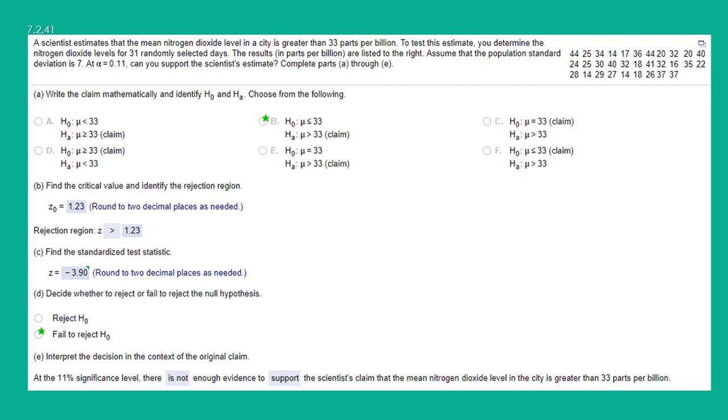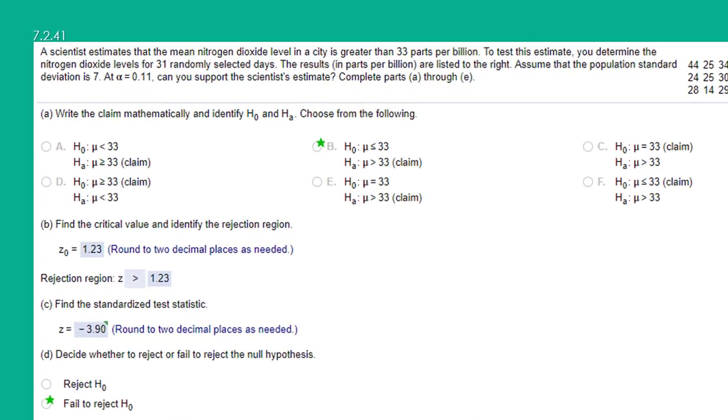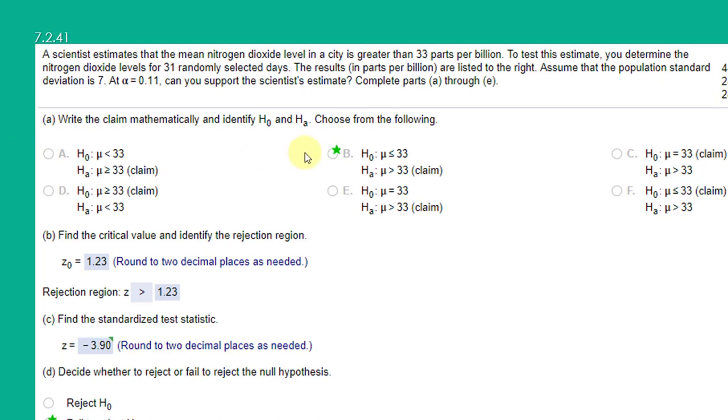We need to do a test of a claim that a scientist has. If we read this, it says the scientist estimates the mean nitrogen dioxide level in the city is greater than 33 parts per billion. Key phrase, greater than, that tells us that this claim must be the alternative because greater than is not a form of equality. And the null always has to be a form of equality.